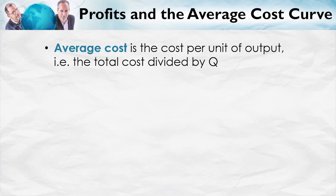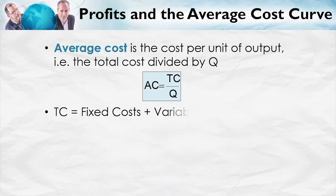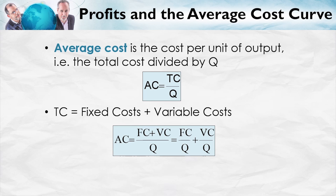As I said in the last lecture, average cost is the cost per unit of output. That is, average cost is total cost divided by Q. Remember also that total cost can be broken down into fixed cost plus variable cost. So we can also write average cost as: average cost equals fixed cost divided by Q plus variable cost divided by Q, the units of output.